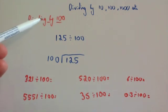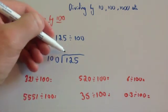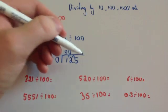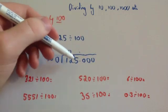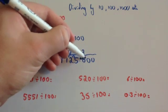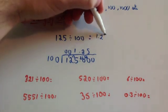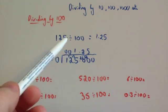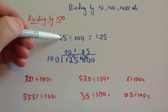Let's have a look at what happens whenever you divide by 100 and it doesn't end in zeros. So we've got 125 divided by 100, let's use short division. 100 into 1 doesn't go, remainder 1. 100 into 12 doesn't go, remainder 12. 100 into 125 goes once, remainder 25. 100 into 250 goes twice, remainder 50. And 100 into 500 goes five times. So whenever we divide 125 by 100, we get 1.25. That means we have moved the decimal place twice to the left. The number of zeros tells you how many places to move the decimal point to the left.